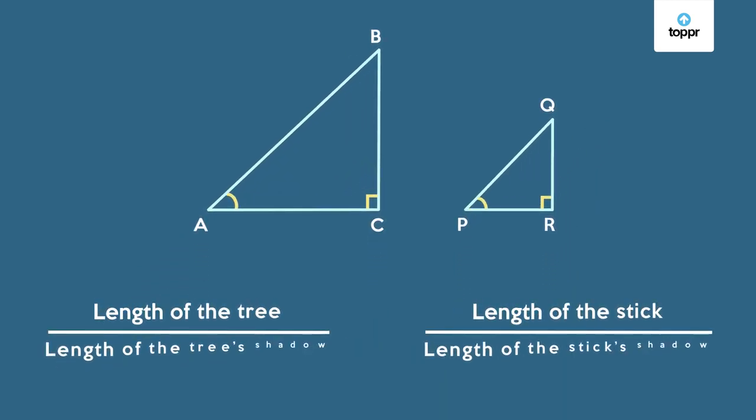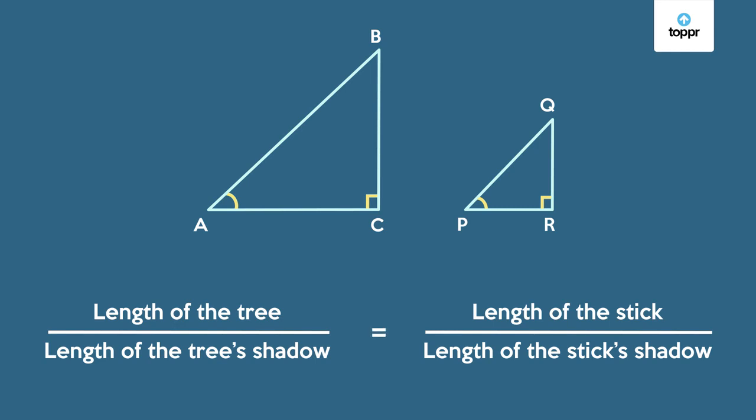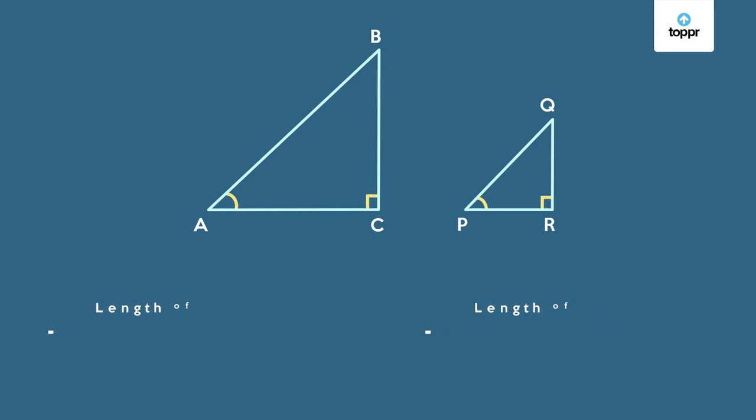Yes, the ratio of the tree's length to the shadow's length is exactly equal to the ratio of the stick's length to the shadow's length.